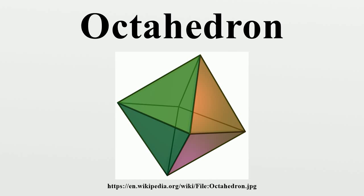Octahedra and tetrahedra can be alternated to form a vertex-, edge-, and face-uniform tessellation of space, called the octet truss by Buckminster Fuller. This is the only such tiling save the regular tessellation of cubes, and is one of the 28 convex uniform honeycombs. Another is a tessellation of octahedra and cuboctahedra.